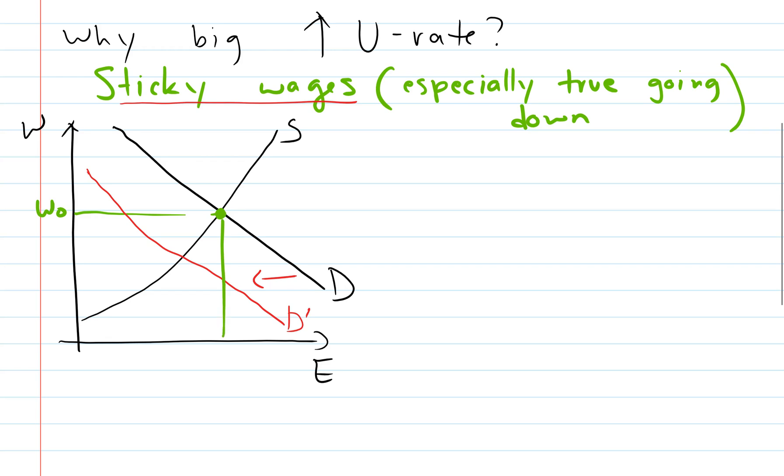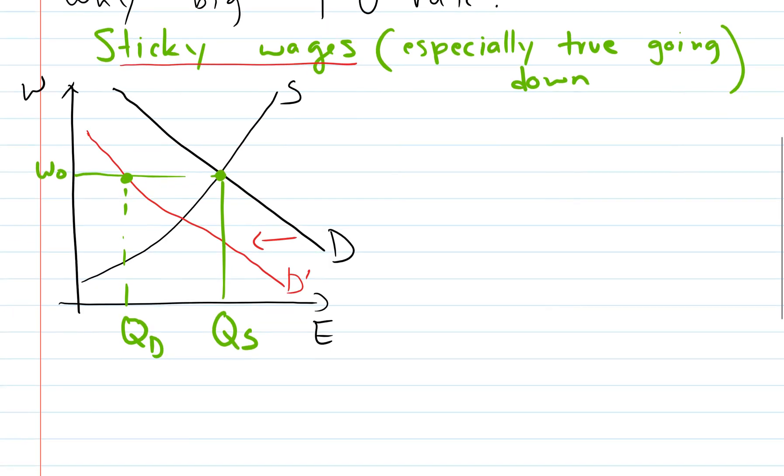We don't go to this new equilibrium where the red line and the black line are crossing. Instead, we stay where we're at. So we've got our sticky wages. So now this is the workers. This is how much they want to work. But at this same wage with the lower demand for labor now because of the slowing economy, this is how much the firms want to hire people. We've got a difference between these two. And this difference between these two is unemployment.